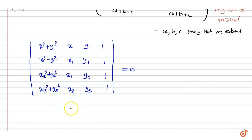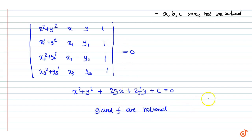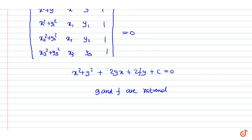Since the circumcircle can be expressed in the form x² + y² + 2gx + 2fy + c = 0, and here g and f are rational — comparing this equation with the determinant form, we can get that g and f are rational. Therefore, the circumcenter of a triangle is rational if (x1, y1), (x2, y2), and (x3, y3) are rational. So the circumcenter is rational.